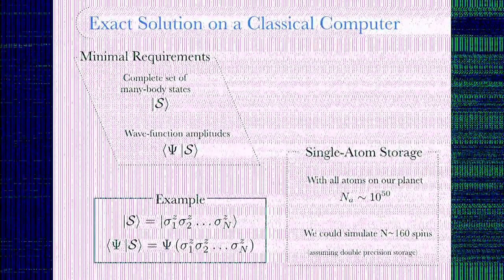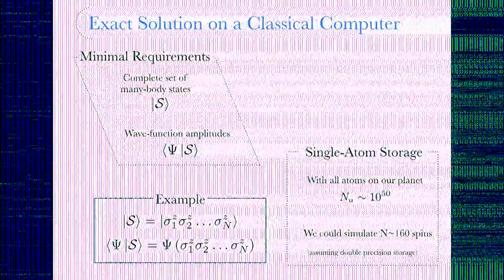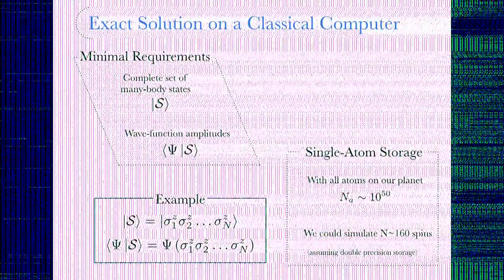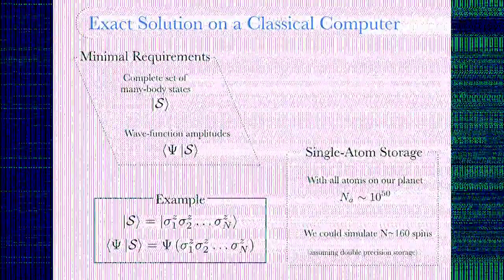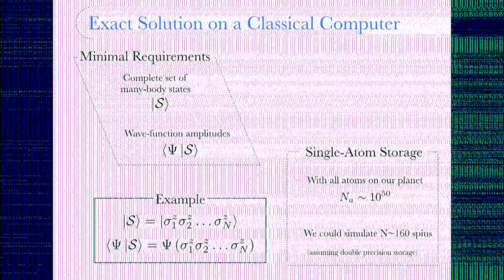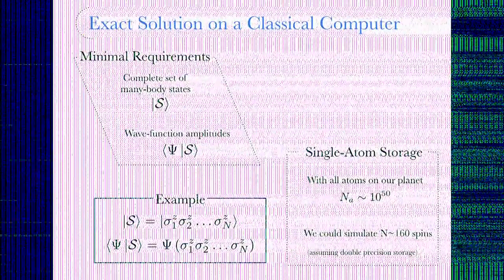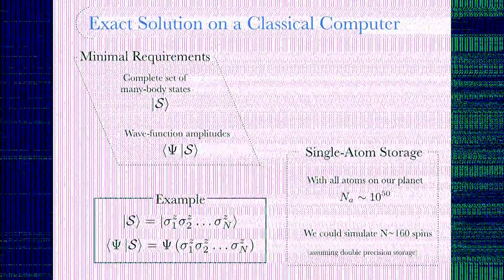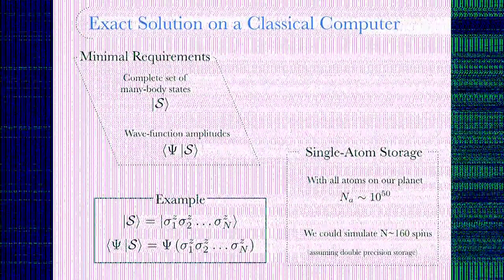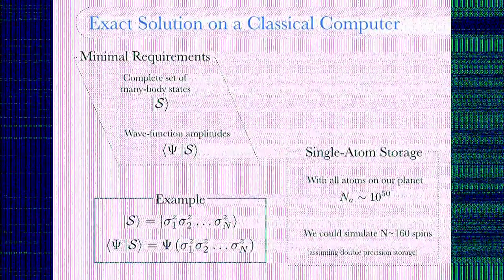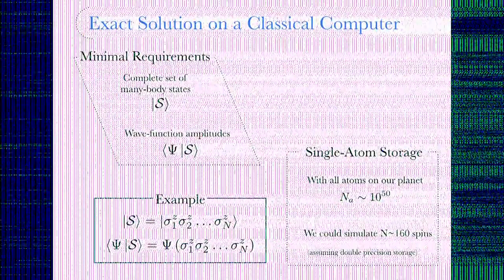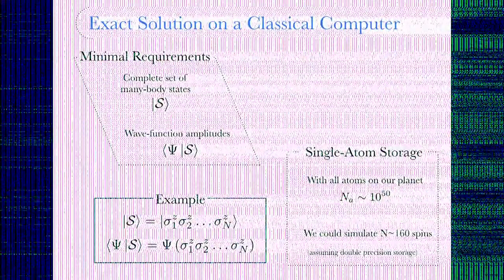This problem is very hard. Finding the ground state is extremely hard for a classical computer because the amount of resources needed grows exponentially with the system size, simply because the Hilbert space is 2 to the n — you need an exponentially large number of amplitudes. We don't want to turn ourselves into a giant hard disk, so we want to solve this problem more efficiently.